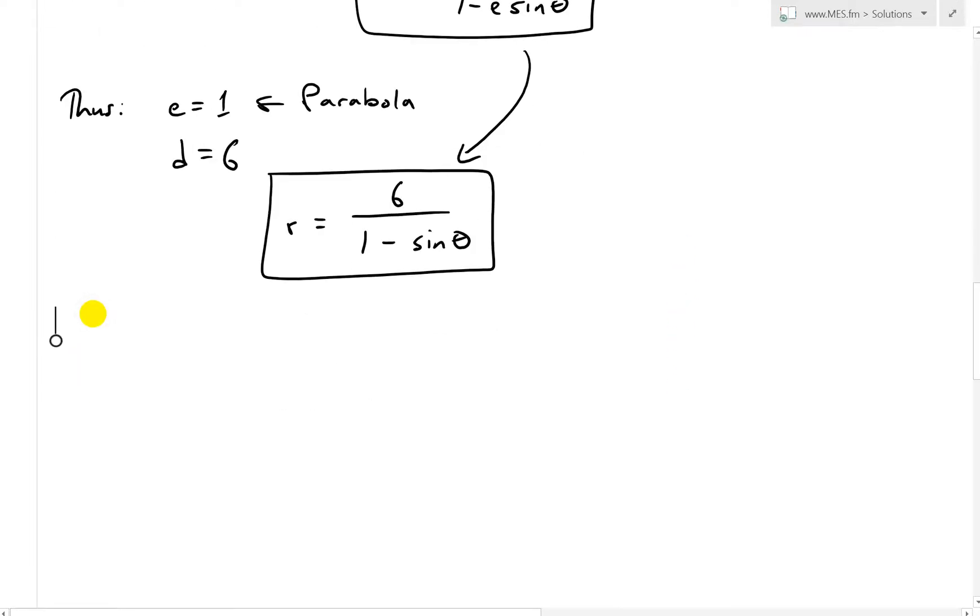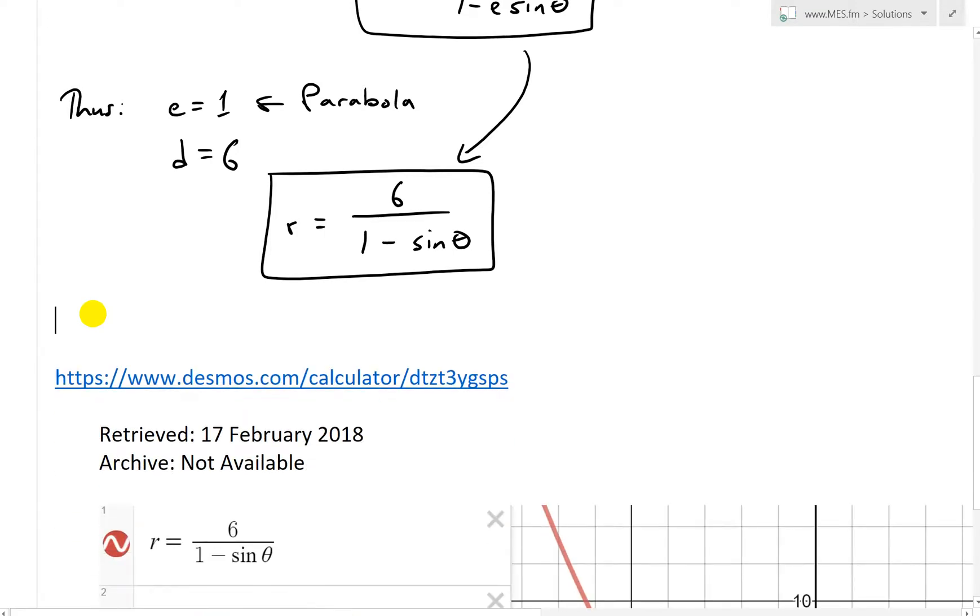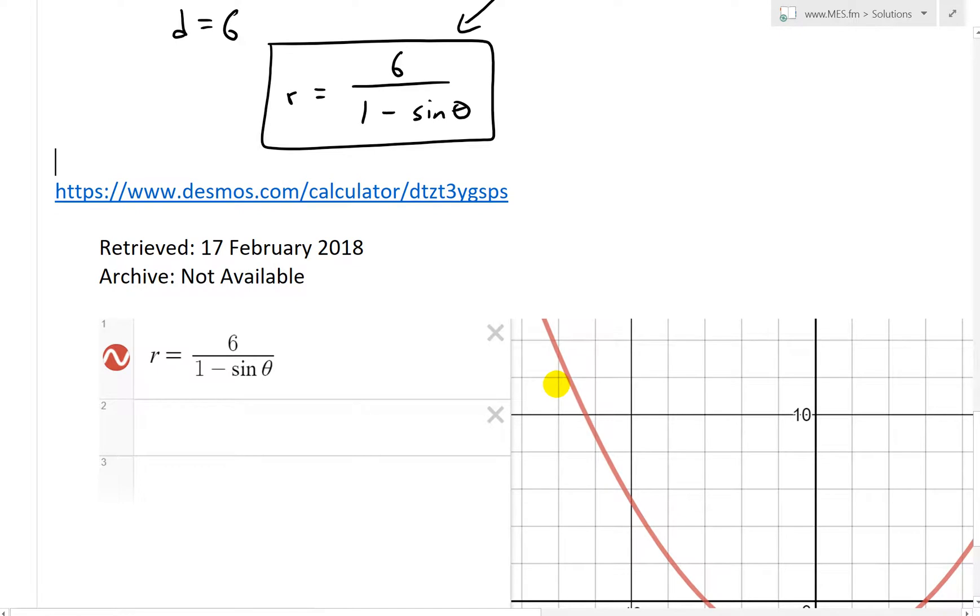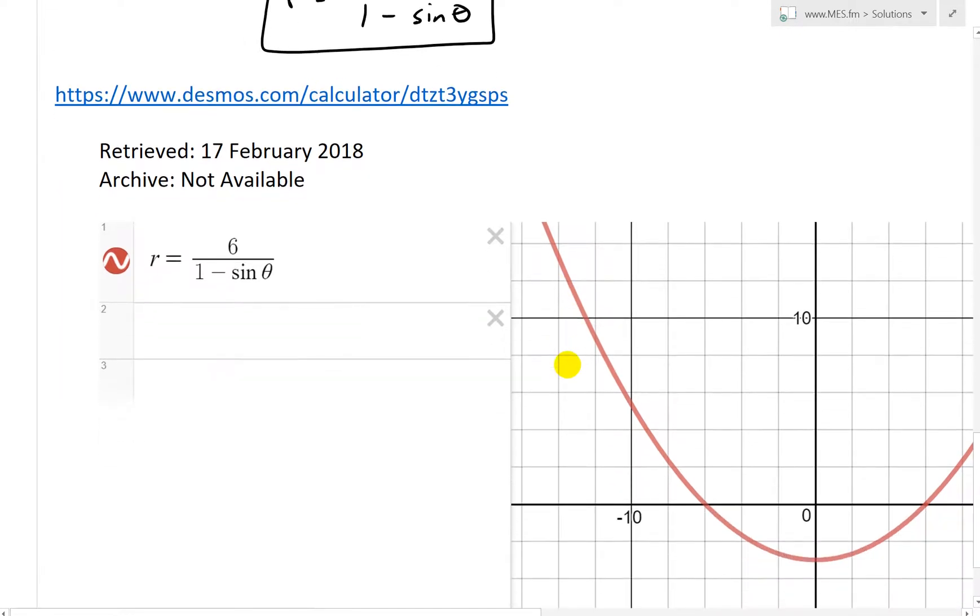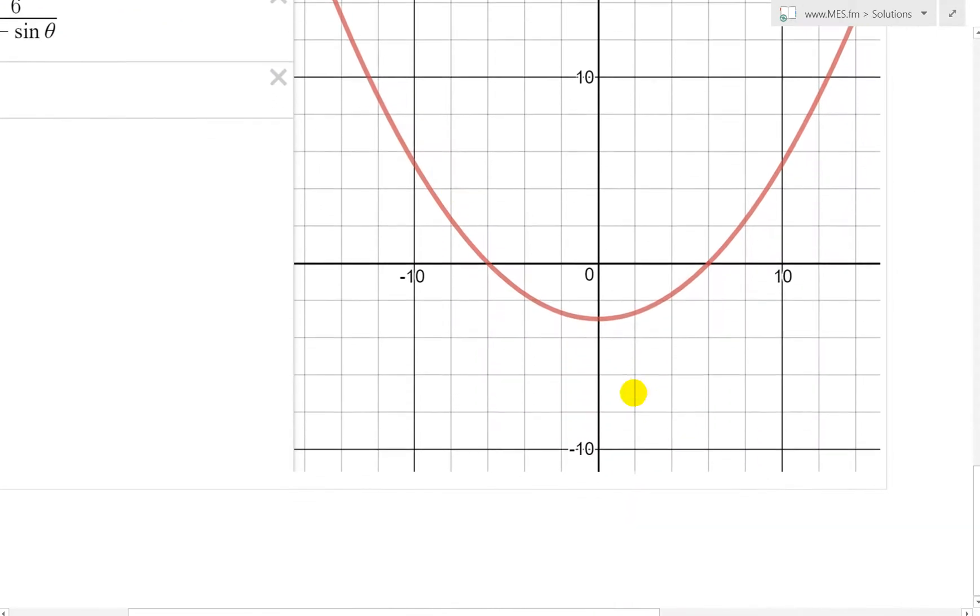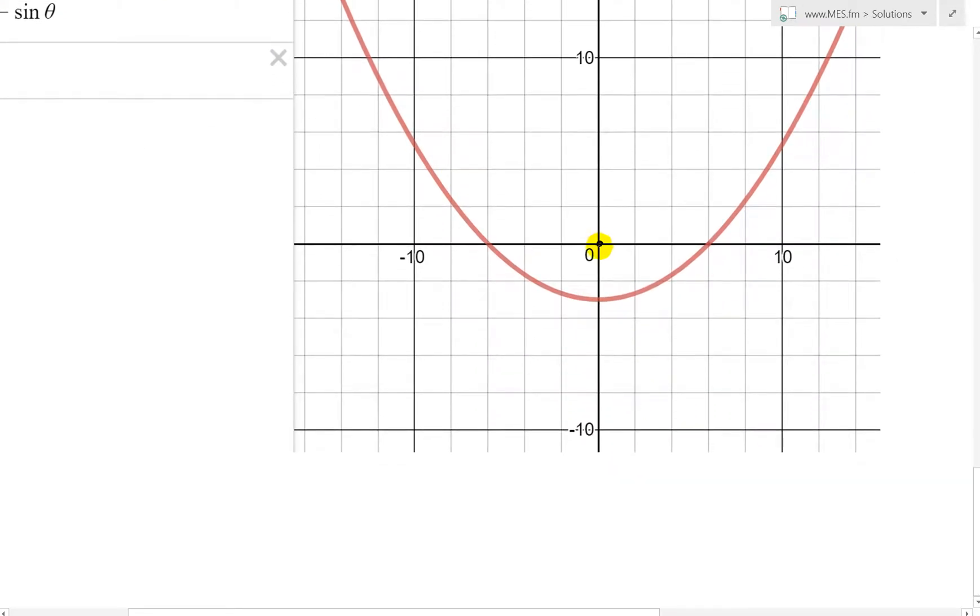So here I've graphed this function out using the amazing Desmos calculator. So r equals 6 over 1 minus sine theta. And this is, in fact, what we get. There is the focus there at the origin. And then this is going to be 2, 4, 6, 8. So then this is the focus like that here.